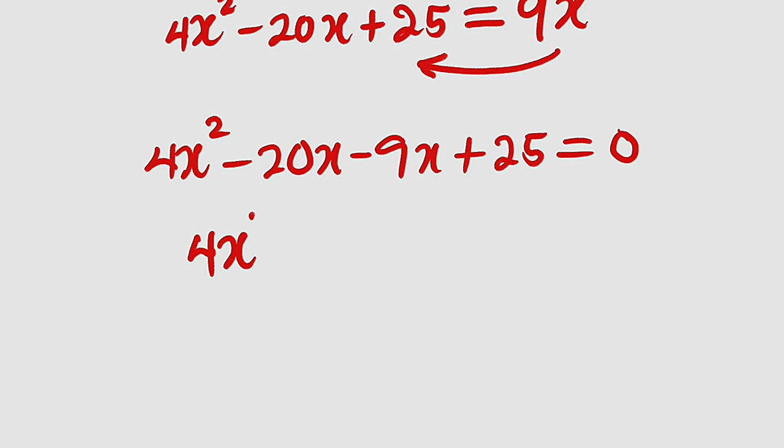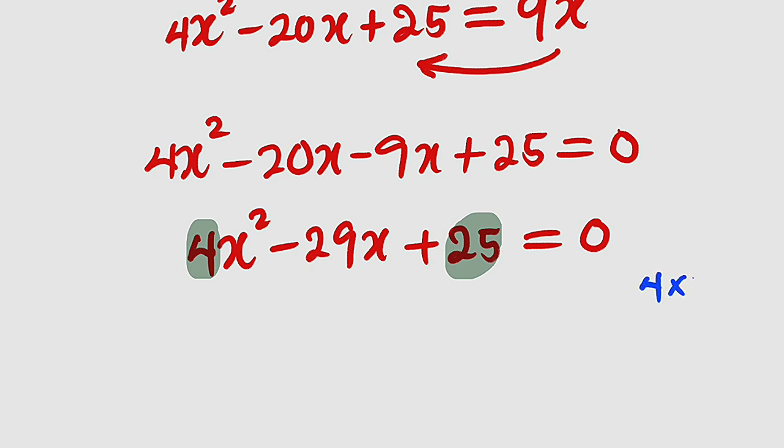This is 4x squared minus 20 minus 9 is minus 29x plus 25 equals 0. This is a quadratic equation that can be factorized. So let us multiply the leading coefficient with the constant term. If we do that, we are going to get 100. 4 multiplied by 25, this is equal to 100.